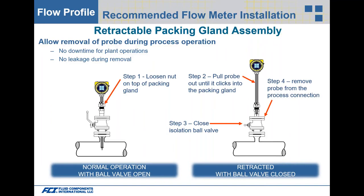For installation best practices, if you don't want to shut down the gas process to remove the flow meter, use a ball valve with a packing gland assembly on the flow element. To extract without shutdown: loosen the top nut on the packing gland, extract the flow element up into the packing gland where it clicks in, close the isolation ball valve, then remove the probe from the process connection — without ever shutting down the process.